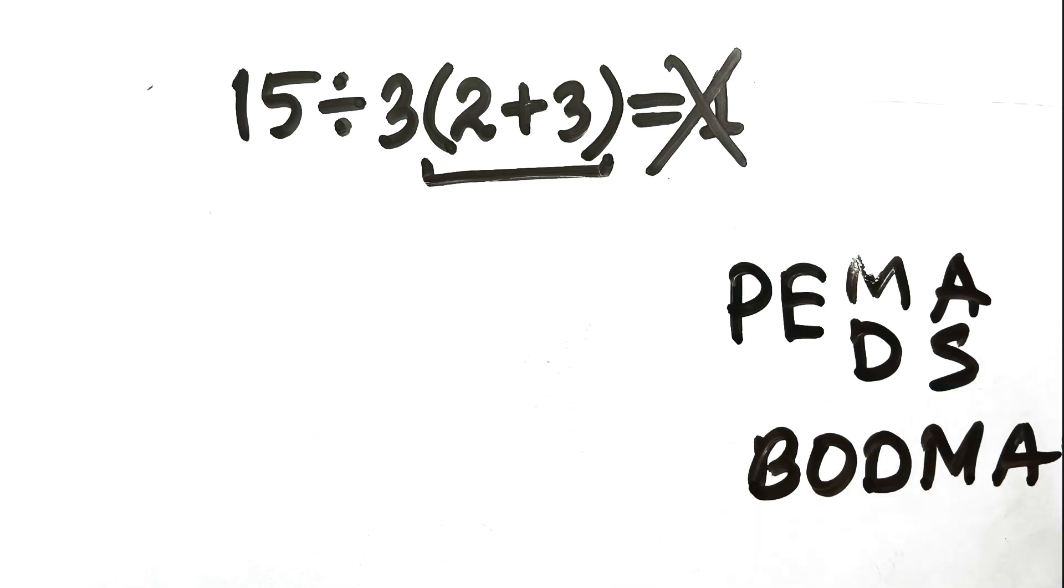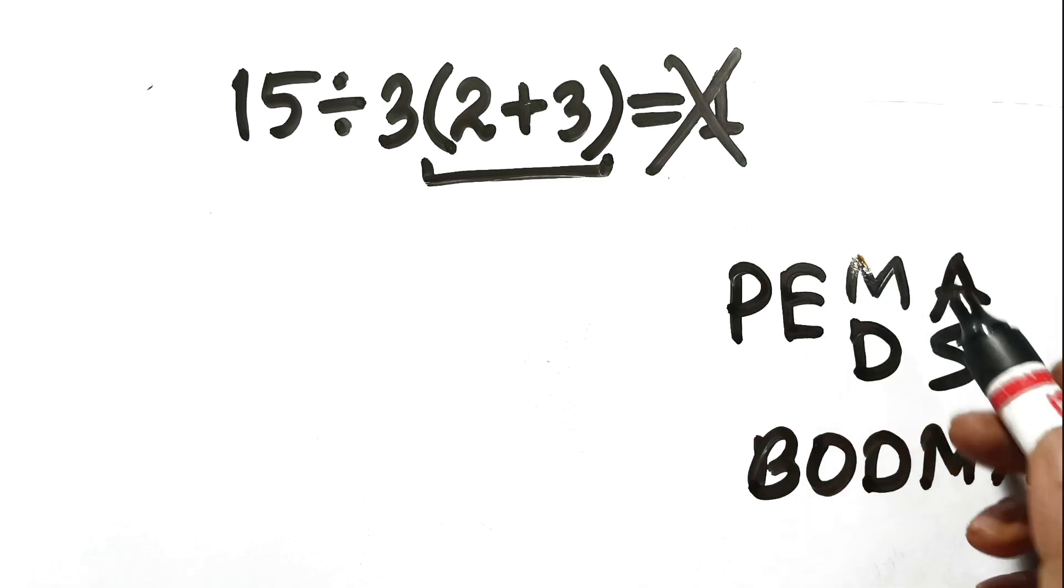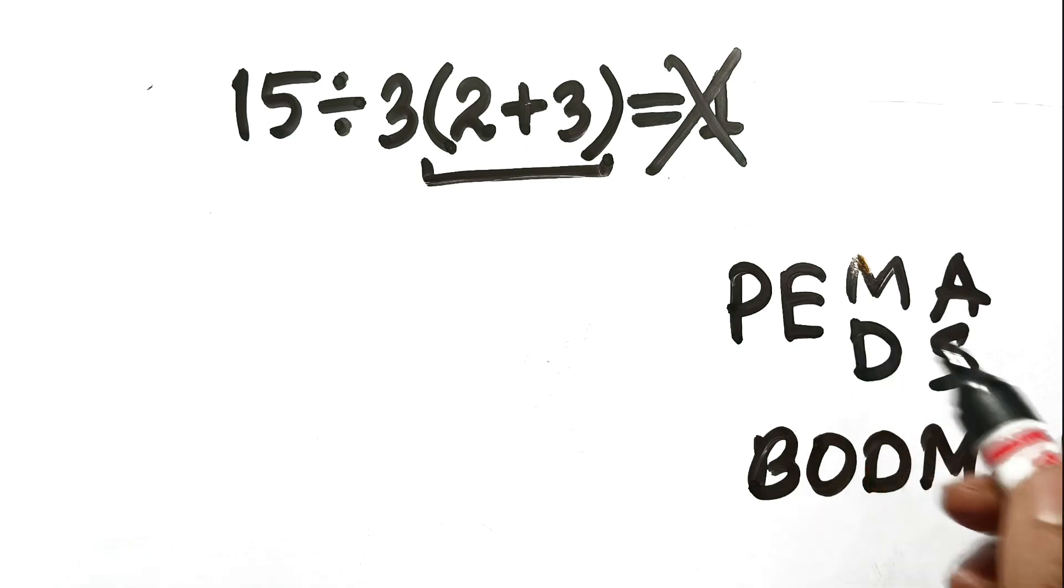The biggest misconception in math is that multiplication always beats division, because the M comes before the D in the acronym. That is a myth. They are actually equals. They have the exact same rank.